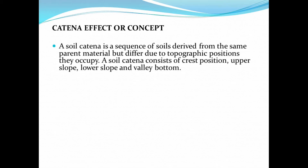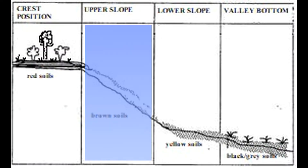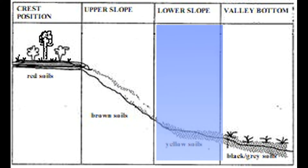First of all, let's take a look at the catena effect or the catena concept. A soil catena is a sequence of soils derived from the same parent material but which differ due to the topographic positions they occupy. A soil catena consists of the crest, the upper slope, the lower slope, and the valley bottom.